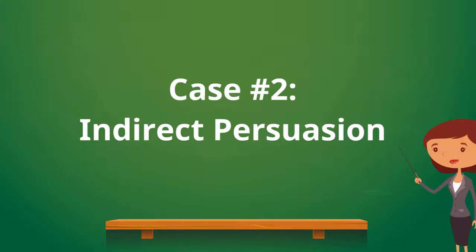The second type of persuasion is indirect persuasion. Unlike direct ones, indirect persuasions rely more on sentence structures and talking strategies to achieve the goal. It strives for gaining an understanding rather than enforcing an action on someone else.